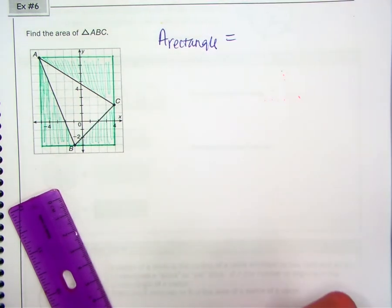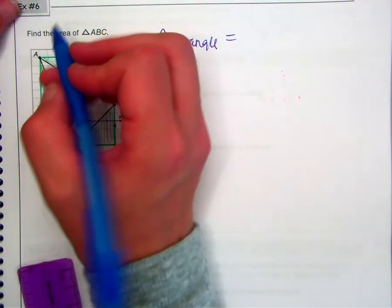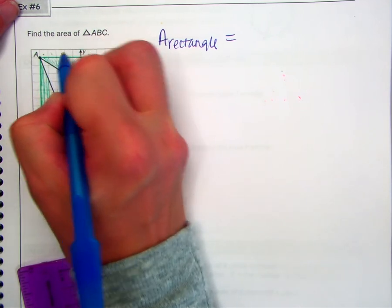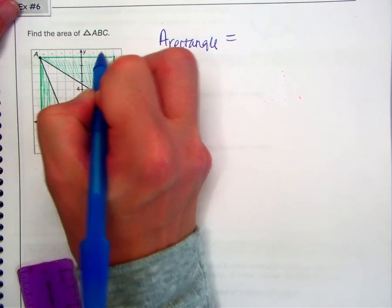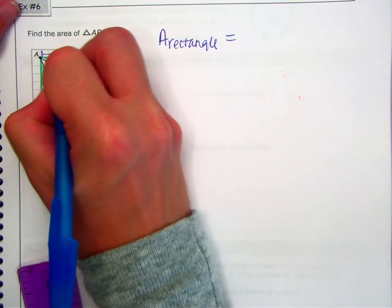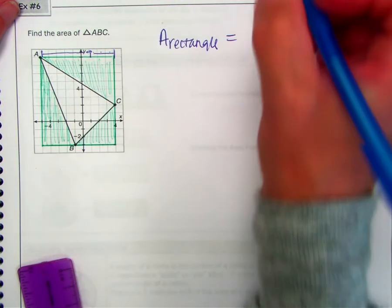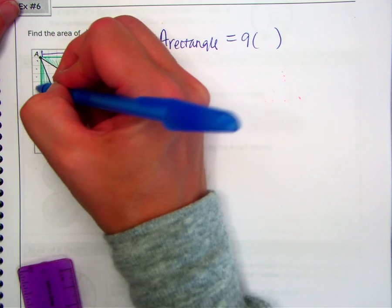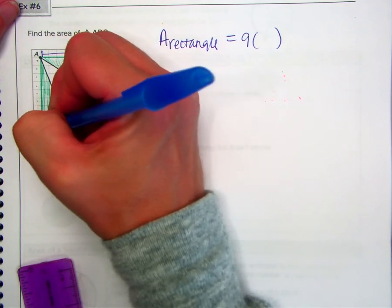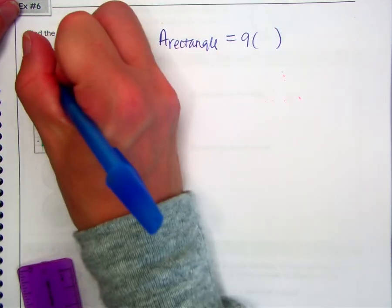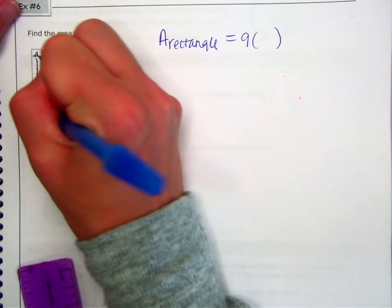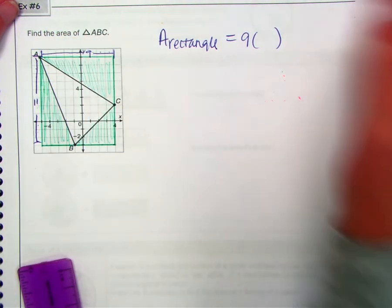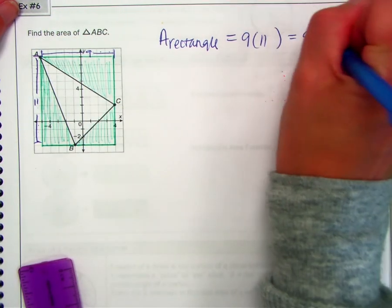So let's first start by calculating the area of the rectangle. That's length times width, so let's count the squares. So 1, 2, 3, 4, 5, 6, 7, 8, 9. So this side is 9 times this side, 1, 2, 3, 4, 5, 6, 7, 8, 9, 10, 11. 9 by 11 is an area of 99.